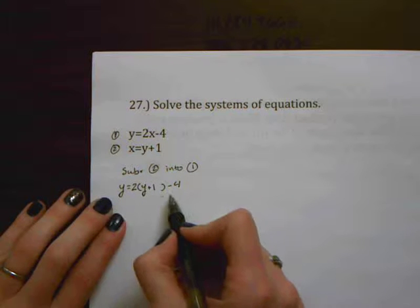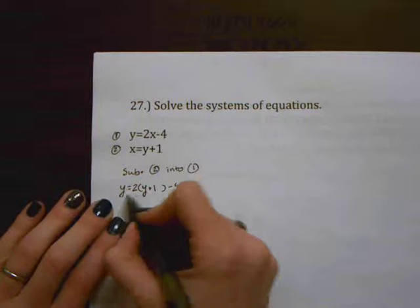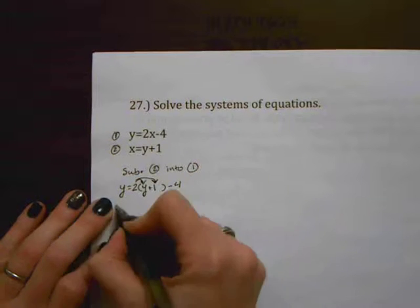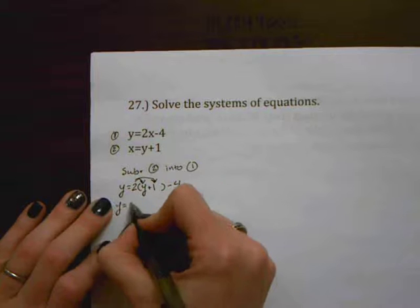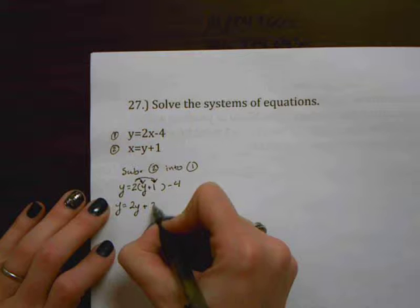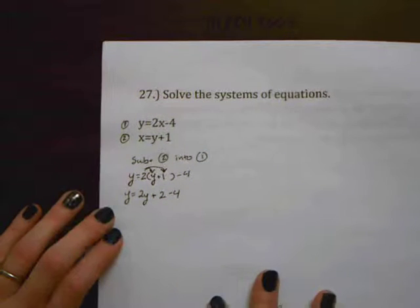Now I have an equation that just has one unknown in it. It's just got that y so I can solve equations like normal. I'm going to start by distributing to get rid of those parentheses. So I have y equals 2 times y plus 2 times 1 is 2 and then I've still got that minus 4.